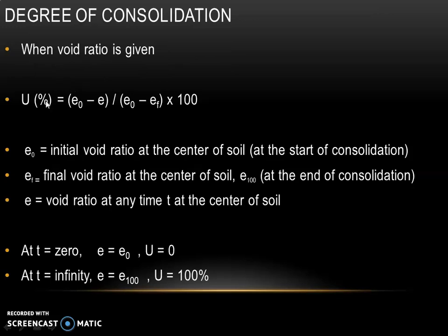When void ratio is given, U in percentage will be equal to (E0 minus E) divided by (E0 minus EF) into 100. E0 is the initial void ratio at the center of the soil at the start of consolidation. EF is the final void ratio at the center of soil, that is E100, at the end of consolidation. E is the void ratio at any time t at the center of soil. At time t equal to 0, E equals E0 and U equals 0. At time t equal to infinity, E equals E100 and degree of consolidation equals 100%.